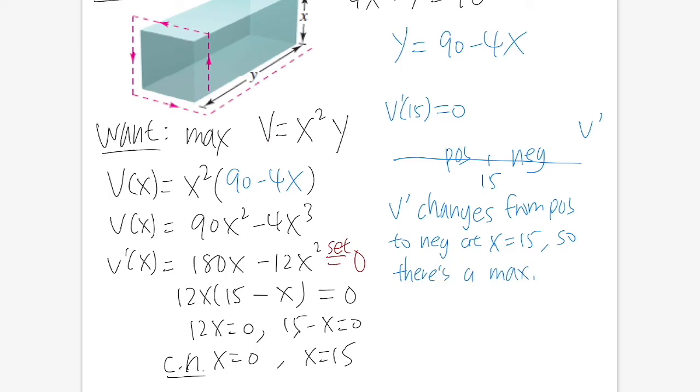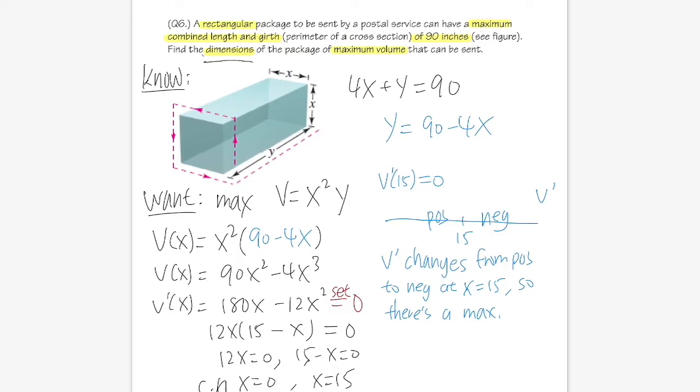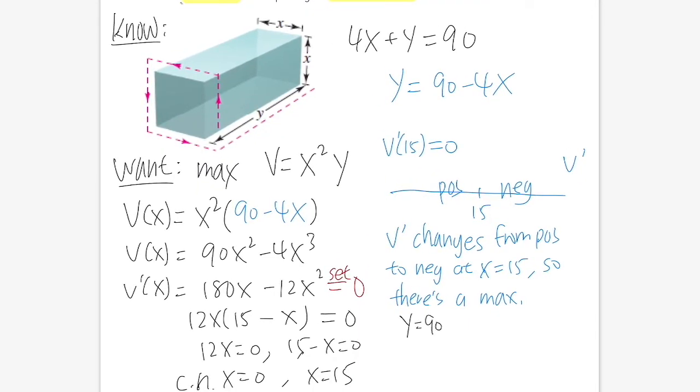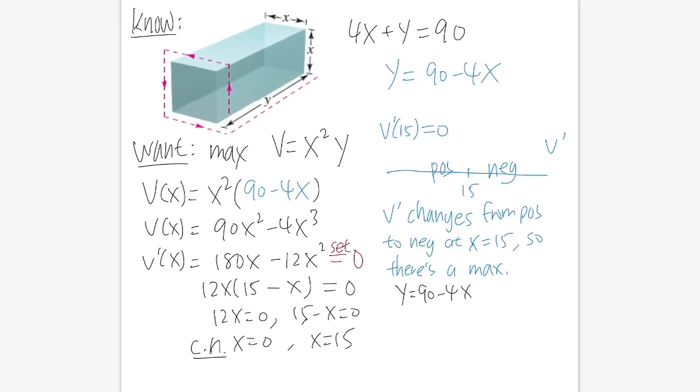Now we have all the verifications, and we want to answer this question by giving the dimension. That means we should find out what y is. We know y = 90 - 4x, and x is 15, so it's 90 - 4 times 15. 4 times 15 is 60, so y is 30.